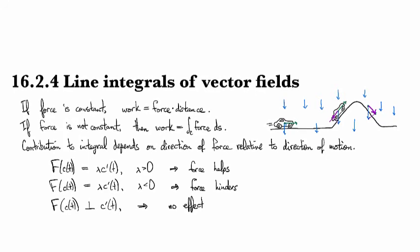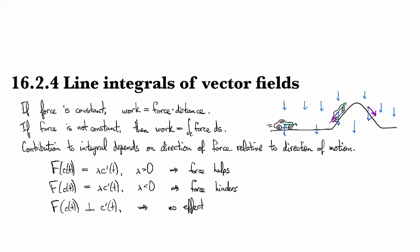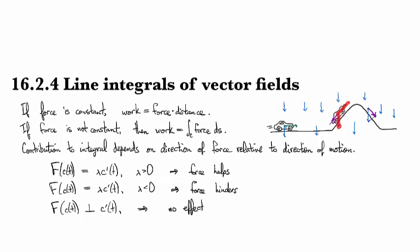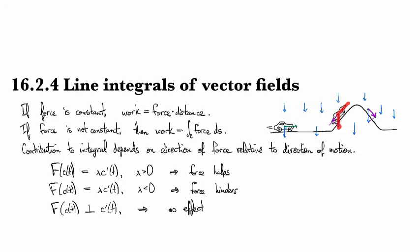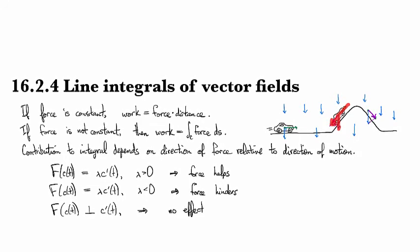So what we really need to take into account then is the dot product between the direction of motion and the vector field at a given time. When I take the dot product, that will give me this projection that points in the negative direction.